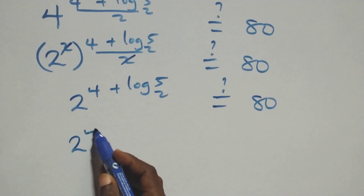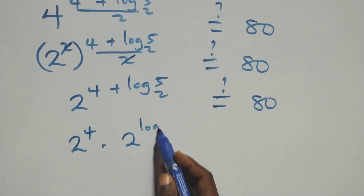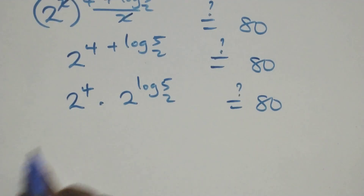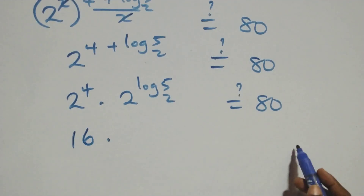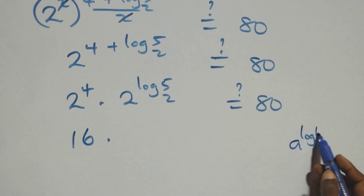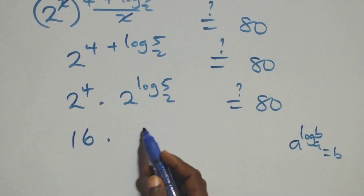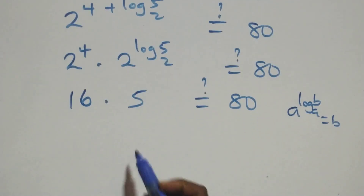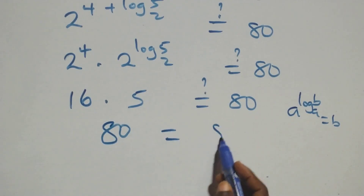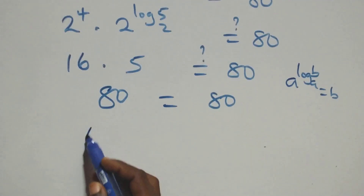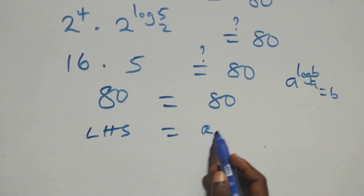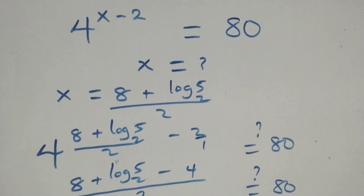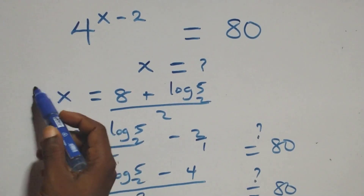From the law of indices, we rewrite this as 2 raised to the power 4 times 2 raised to the power log base 2 of 5, equals 80. Now 2 raised to the power 4 is 16. And from the rule a raised to log base a of b equals b, we have 2 raised to log base 2 of 5 equals 5. So 16 times 5 equals 80, which equals 80 on the right-hand side. Left-hand side equals right-hand side. Therefore we conclude that x equals (8 plus log base 2 of 5) over 2 satisfies the given problem.